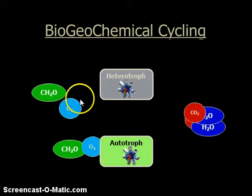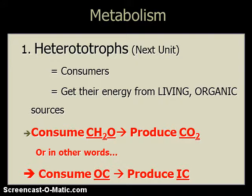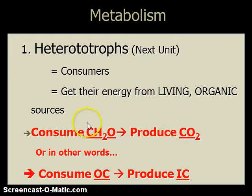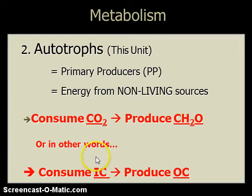Here the focus is carbon, and we'll focus much of the time on that in this class. Let's go through a couple summary slides. The heterotrophs — which we're focusing on next unit — are the consumers. They get their energy from living organic sources, something that was living or once living, pre-packaged food. They consume carbohydrate or organic carbon and produce carbon dioxide — consume organic carbon, produce inorganic carbon. The autotrophs, which we're focusing on this unit, are the primary producers. They get their energy from non-living sources. They consume carbon dioxide and produce carbohydrate, in the form of energy molecules and as a living organism. Consume inorganic carbon, produce organic carbon — just different ways of saying the same thing.